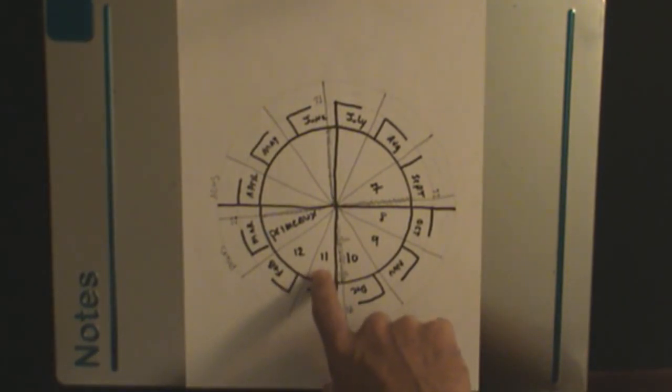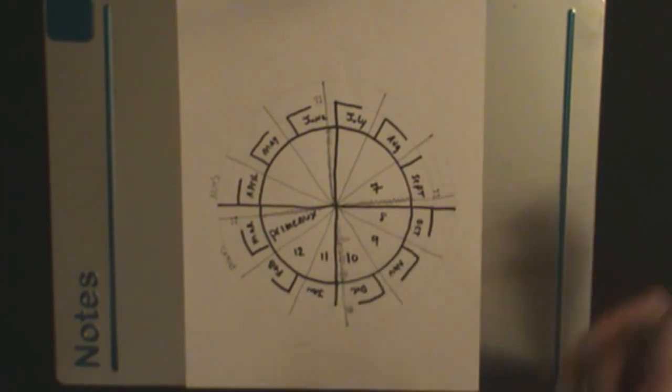So January is actually the 11th month, February is actually the last month of the year, and then back to March being primo. So there you have it. It's written right in the words of the month.